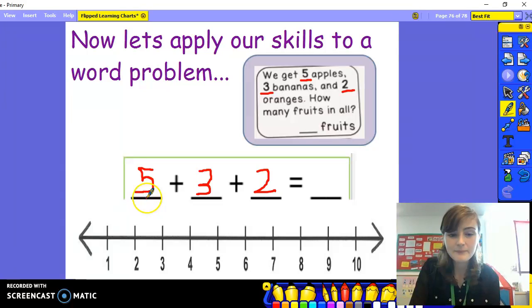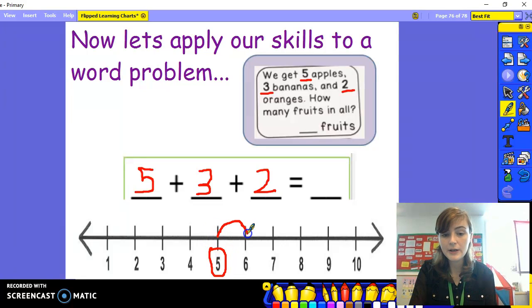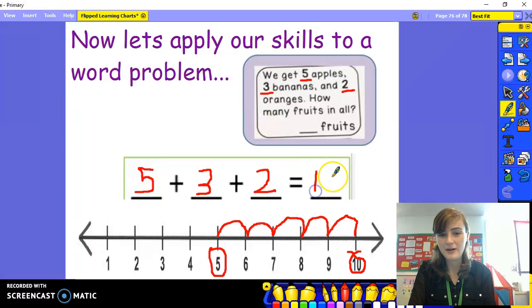Let's do it on the number line. Let's start on five. And we are adding three. One, two, three. But we're not finished yet because we still have to add two more. So let's count on again. One, two. I landed on ten. Did you? Great work. You're very good at this.